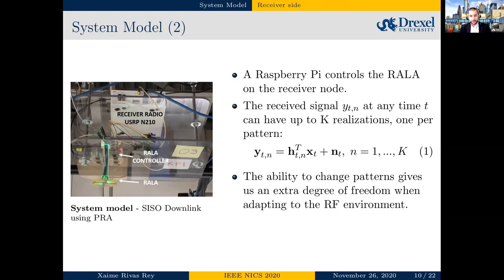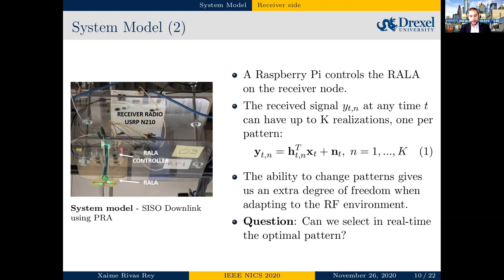Between the radio and the antenna, we use a Raspberry Pi to control the antenna. The advantage of the reconfigurable antenna is captured in this equation: T is the time during transmission and N is the antenna state being used. Not only do we observe a different channel over time, but we also have an extra degree of freedom to change the channel we perceive, and thus change the received packet depending on environmental characteristics. The question remains: can we select the optimal pattern in real time?